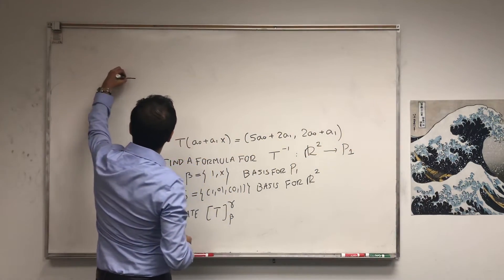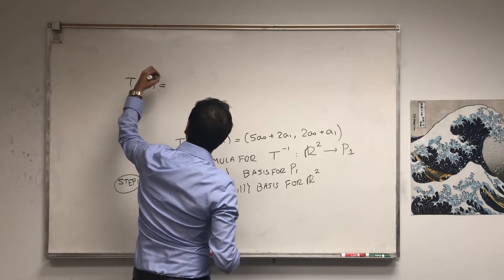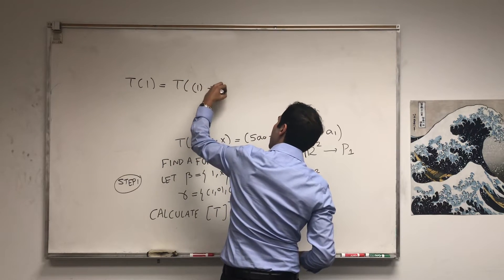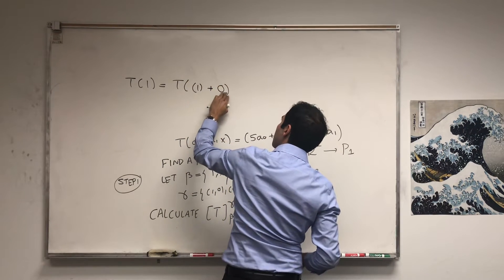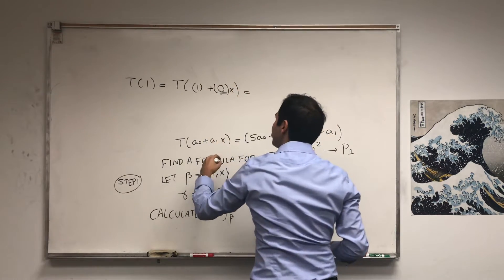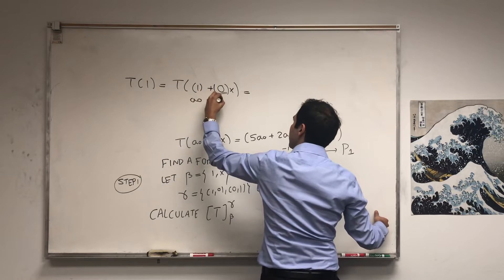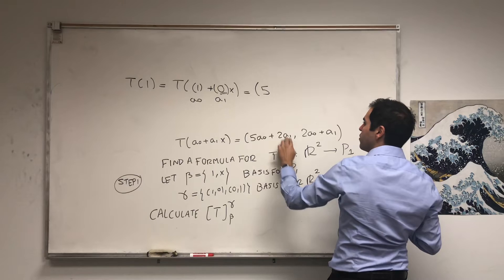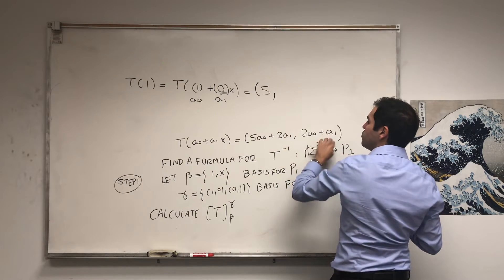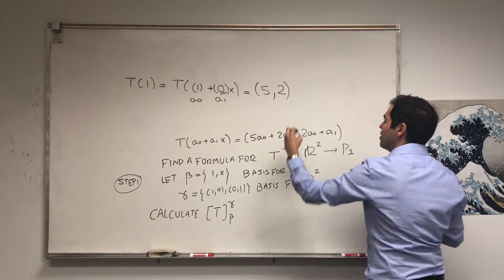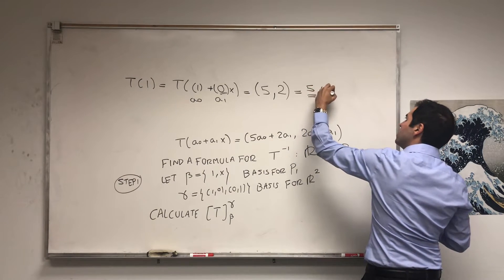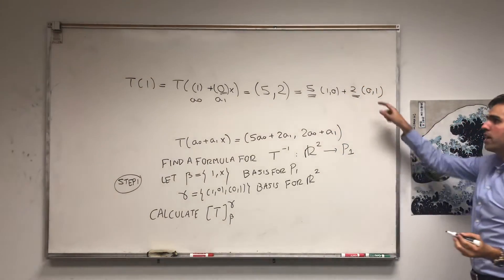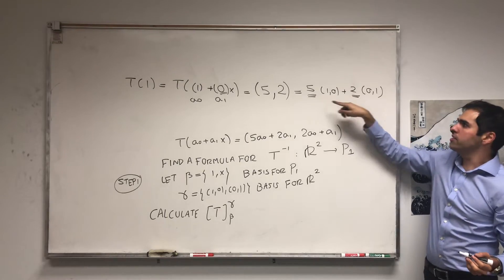So, let's see. T of 1, that corresponds to a0 is 1 plus a1 is 0x. And by definition, what this becomes, so this is a0 and this is a1, becomes 5 times 1 plus 2 times 0, and 2 times 1 plus 0 times 1. So 5,2. And that's 5 times 1,0 plus 2 times 0,1. Which tells you that the first column of the matrix is 5,2.